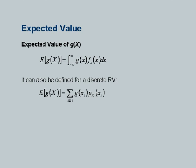We can also define the expected value of a function of X. If g(x) is a function of X, we obtain E[g(X)] as g(x) multiplied by the density function, integrated from minus infinity to plus infinity — that is the definition for a continuous random variable. Similarly, for a discrete random variable, you compute g(x_i) multiplied by the probability mass function and sum it up to get the expected value of the function.